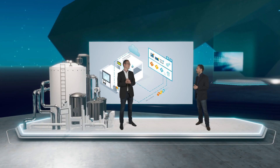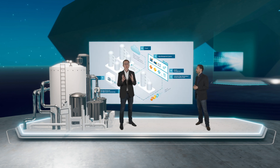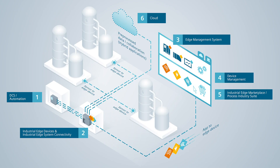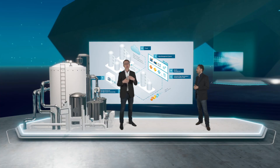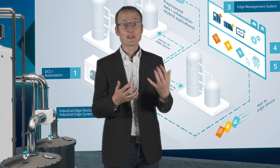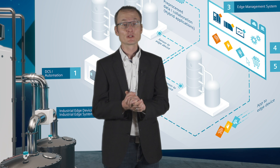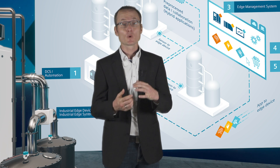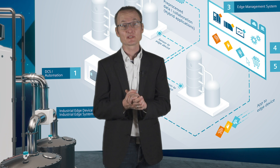Tell me about the components involved in Industrial Edge. Siemens Industrial Edge is made up of four components: the Industrial Edge Hub, the Industrial Edge Management System, the Industrial Edge Devices with the Industrial Edge Runtime, and Edge Applications. Edge apps can be sourced either directly from Siemens or from other vendors. You can also develop your own apps, for example with Mendix, a low-code IoT solution for developing IoT applications without needing special programming skills.